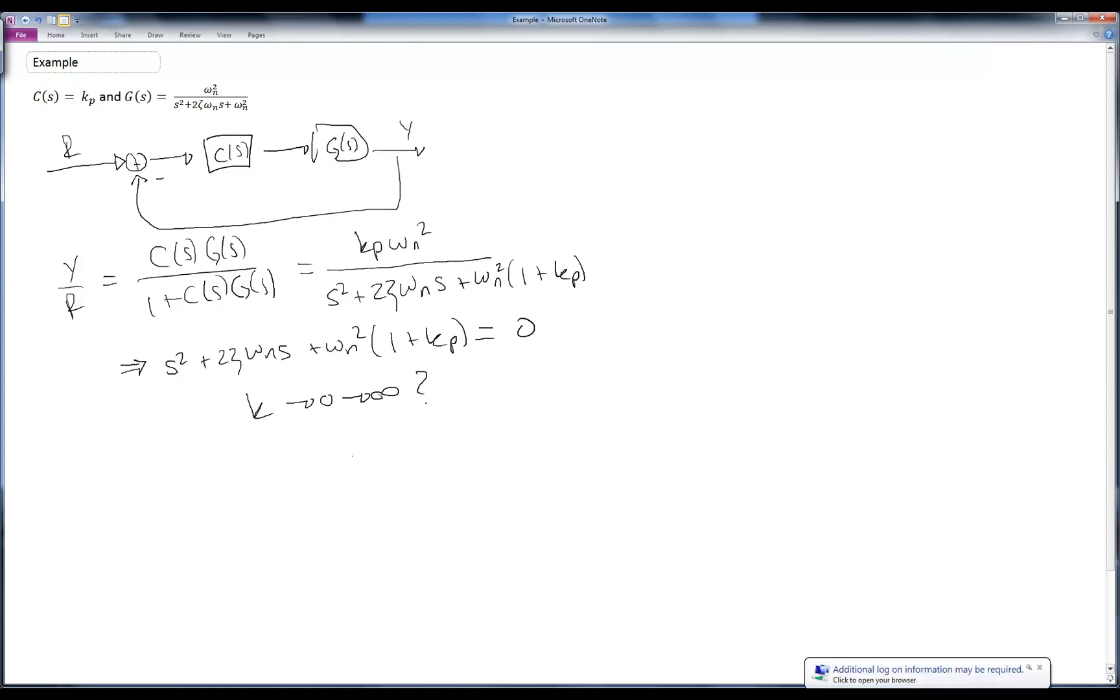Well, for reasons that will become clear in class, we have to separate the stuff that has to do with kp from the stuff that doesn't have to do with kp. And then we're going to go ahead and divide through. So in other words, I have s squared plus 2 zeta omega n s plus omega n squared, and then separate out omega n squared times kp equals 0. And then I'm going to divide this whole thing by s squared plus 2 zeta omega n s plus omega n squared. So I end up with 1 plus kp times omega n squared over s squared plus 2 zeta omega n s plus omega n squared is equal to 0.